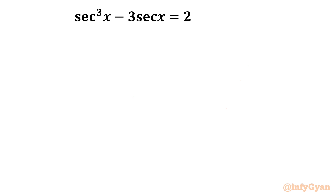Welcome back to Infigyan friends. In this video we are going to take up an interesting trigonometric equation. The equation is sec³x − 3 sec x = 2. I will demonstrate two methods to solve this problem: Method 1 using factorization, and Method 2 using substitution.